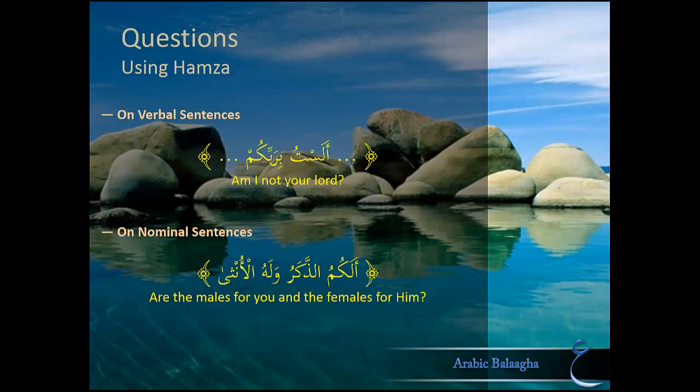The first interrogative word is the Hamza Maftooha. The Hamza Maftooha is a particle that comes at the beginning of a sentence and turns the sentence into a question. For example, لَسْتُ بِرَبِّكُمْ (Am I not your lord?) is a non-question sentence. The Hamza Maftooha comes at the beginning and turns it into أَلَسْتُ بِرَبِّكُمْ, which is a question.